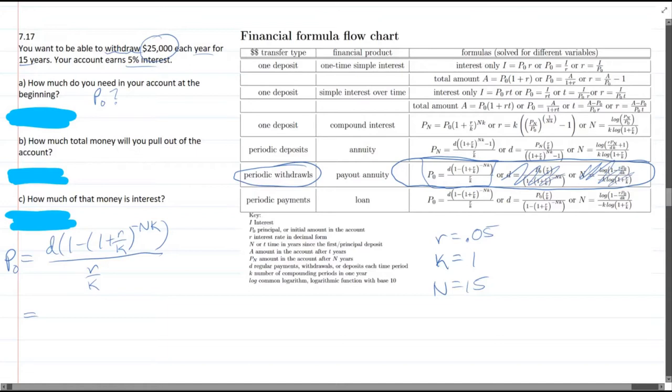Okay, so we need the D value, so $25,000 each year. That's how much we're going to withdraw. 25,000 parenthesis 1 minus 1 plus R over K, 0.05 divided by 1 to the negative 15 times 1, close parenthesis, divided by R over K.